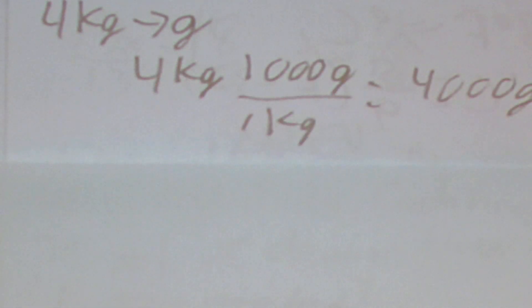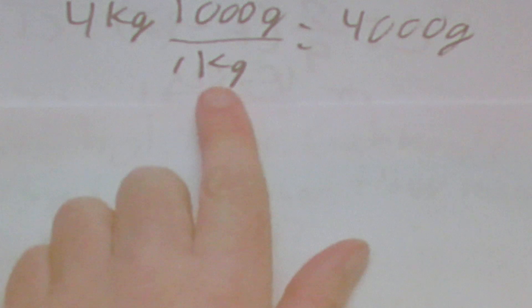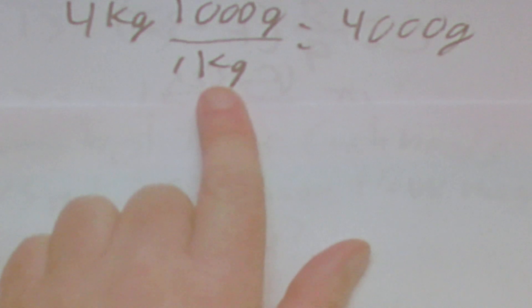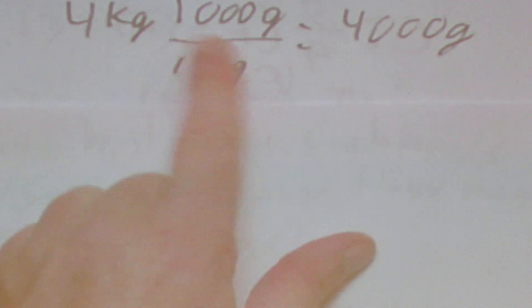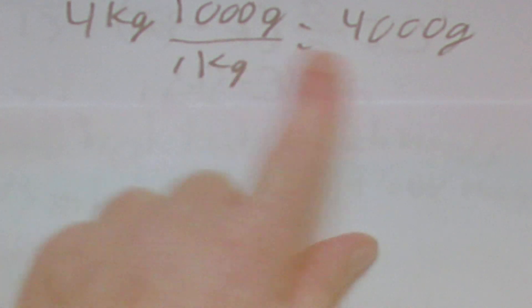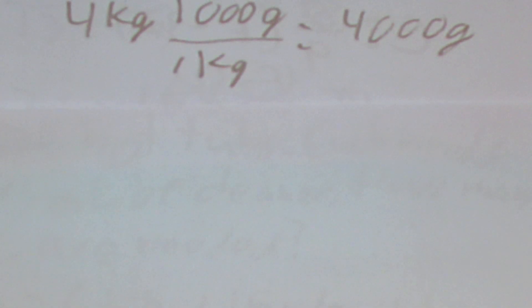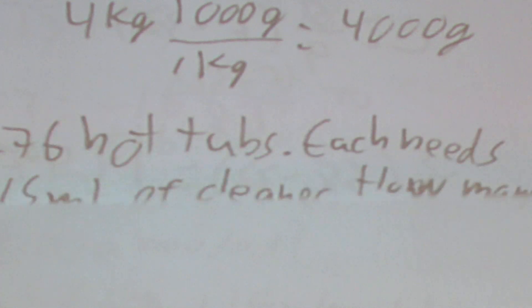Next, going from kilograms to grams — say we have 4 kilograms. There are 1,000 grams per kilogram, so 4 times 1,000 is 4,000 grams.